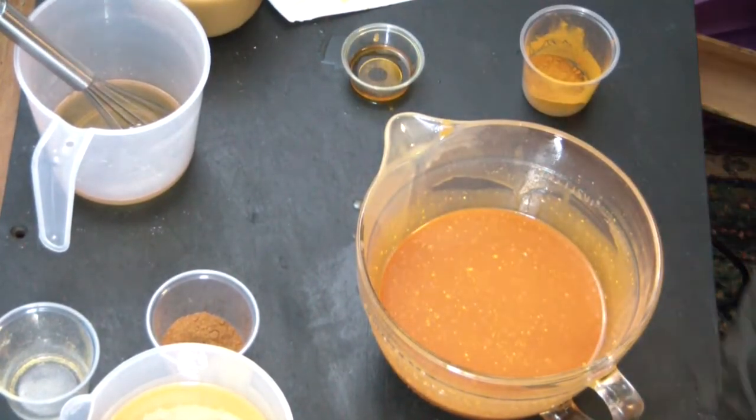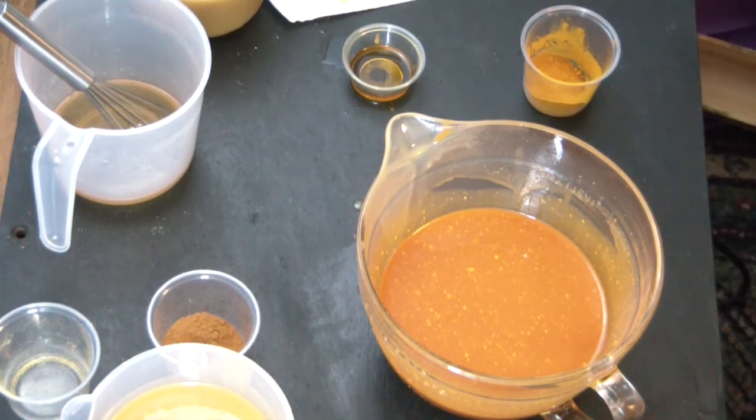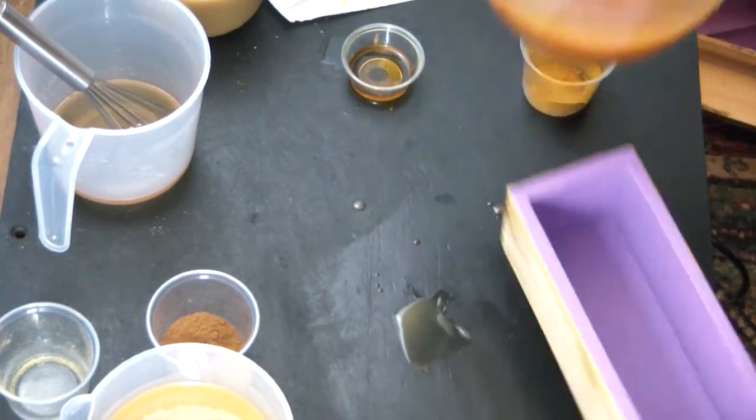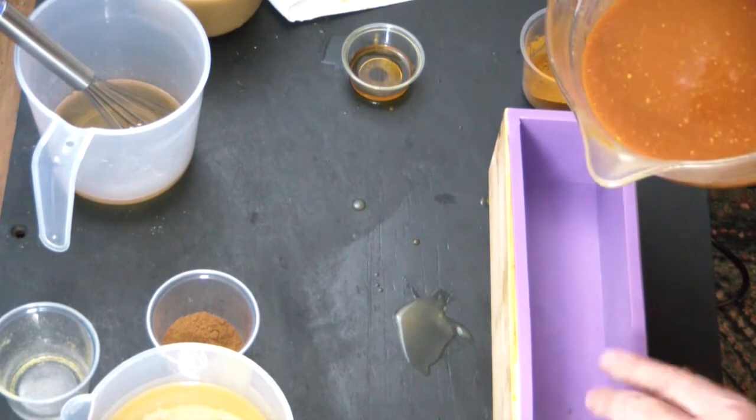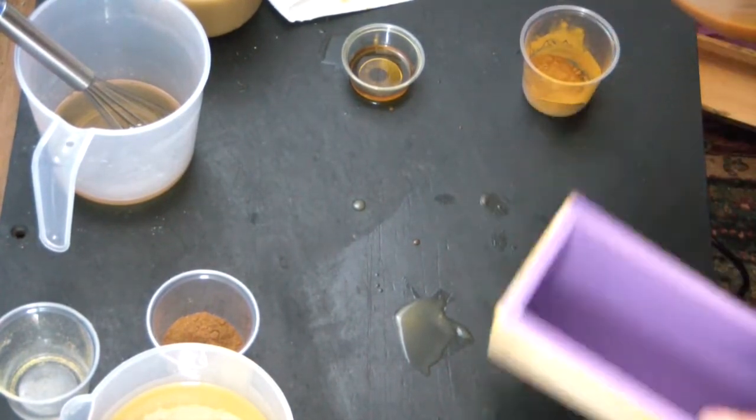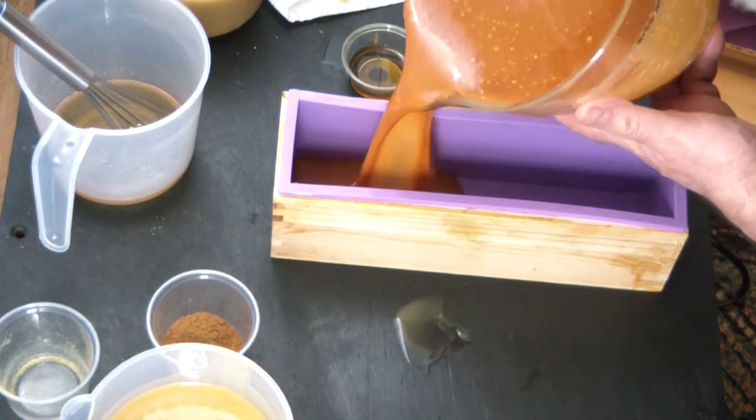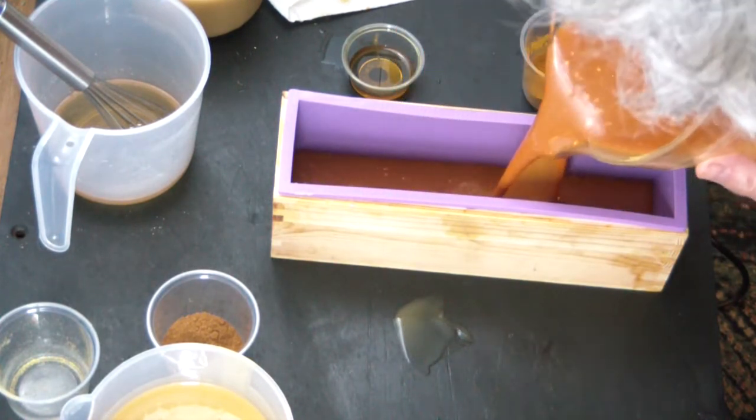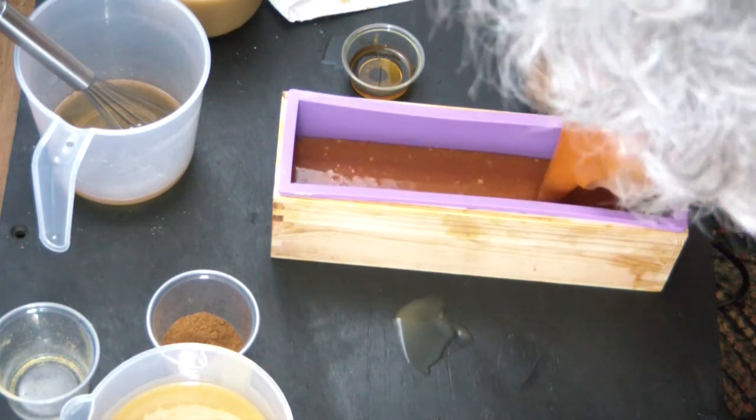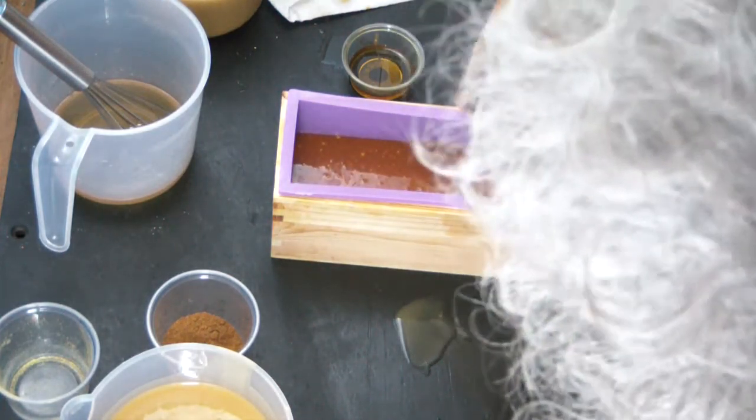Now I'm just going to pour this orange base into the mold. Did I not mention that that also has ground up orange peel in it? If I didn't, I'm telling you now. You can see it there and my hair.